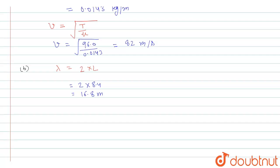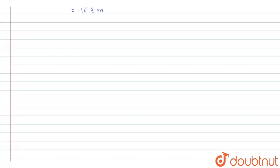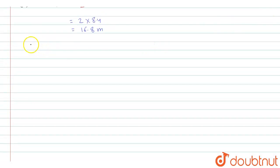Now, let's come to part C. The formula to calculate the frequency of the wave is given by V upon lambda. Substitute all the values we get 82 by 16.8 and this will be equal to 4.38 Hertz.